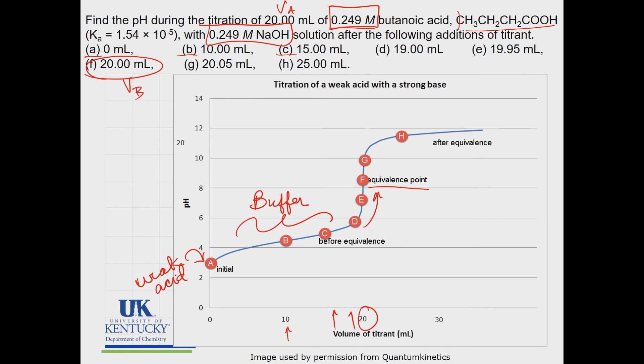So we're at the 20 milliliter mark here for the equivalence point. Equivalence point is when you have just converted all of the weak acid to its conjugate base. Then what you do is you keep on adding, and when you keep on adding extra base you'll notice that the pH will shoot up rapidly beyond that equivalence point.